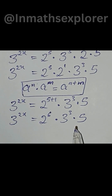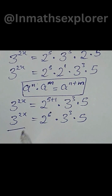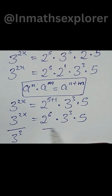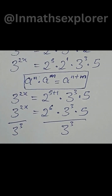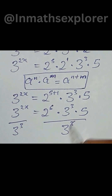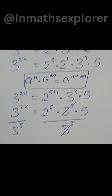Then multiplied by 3 to the power of 5. Let's divide both sides by 3 to the power of 3. Over here we have 3 to the power of 3, so this cancels with this and this can swap with this.